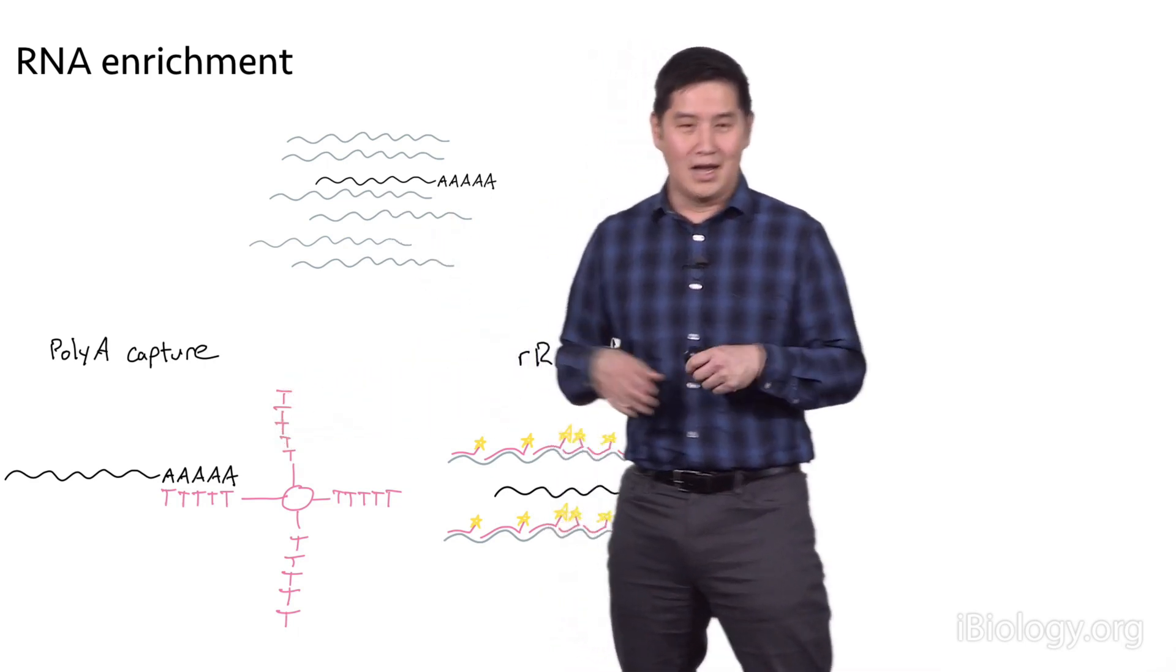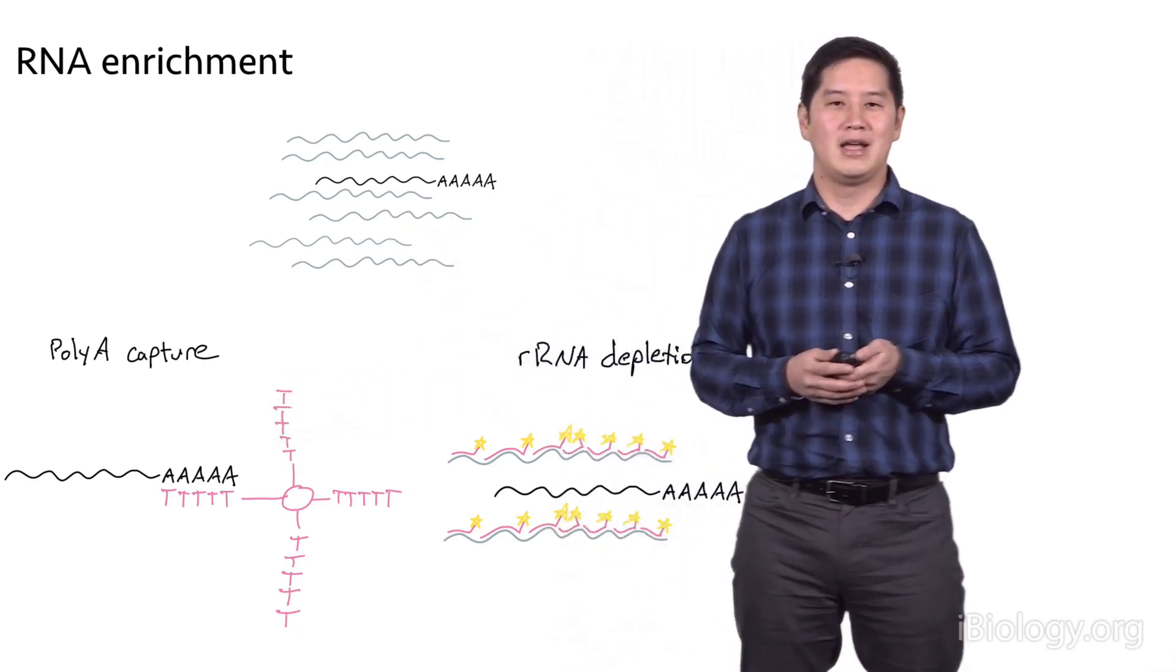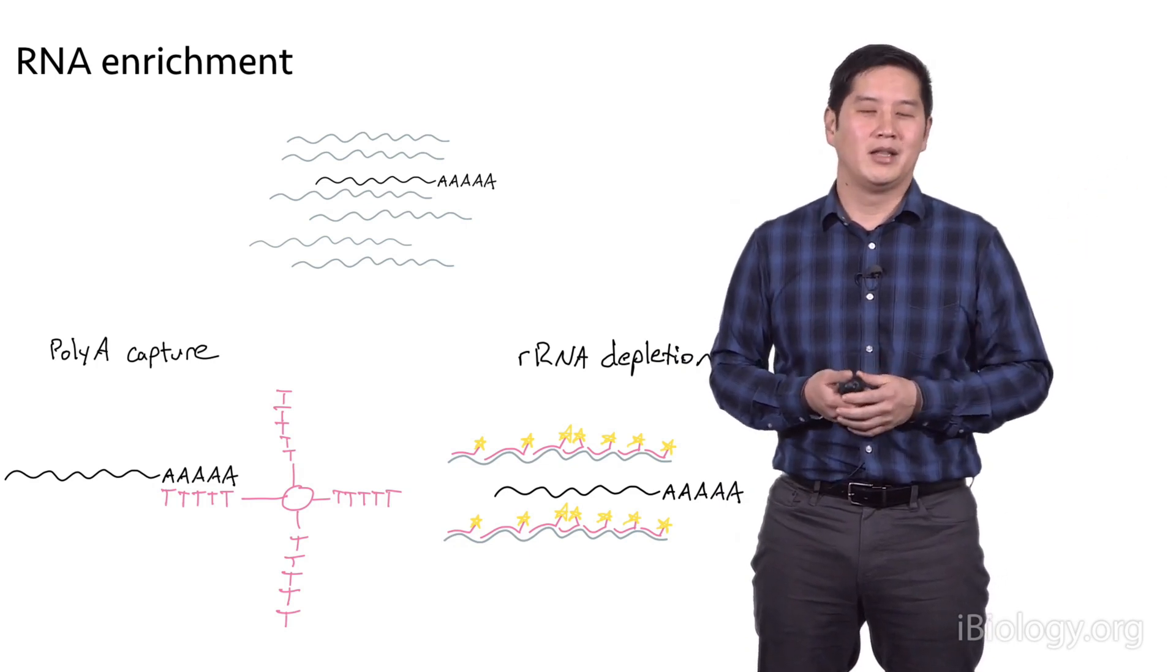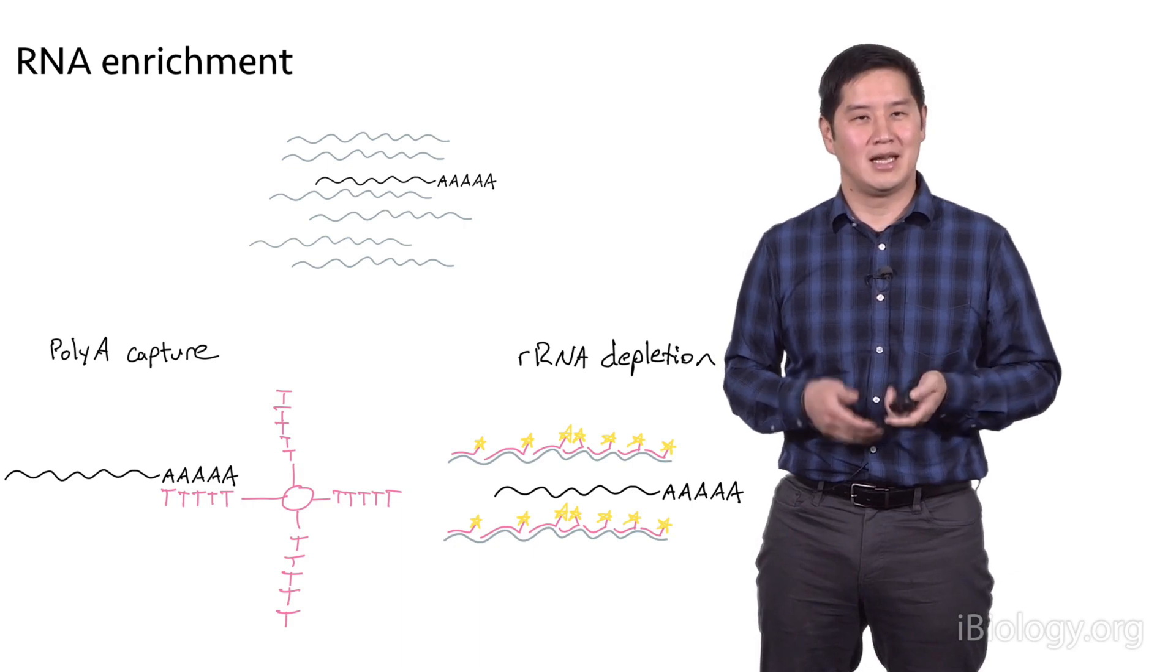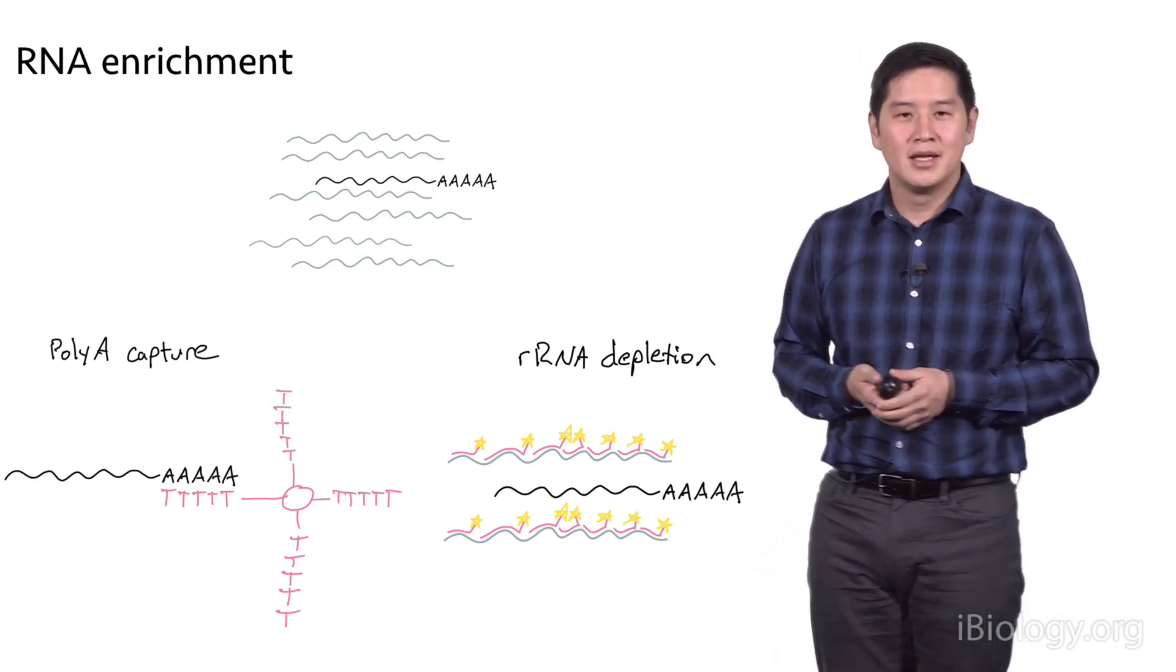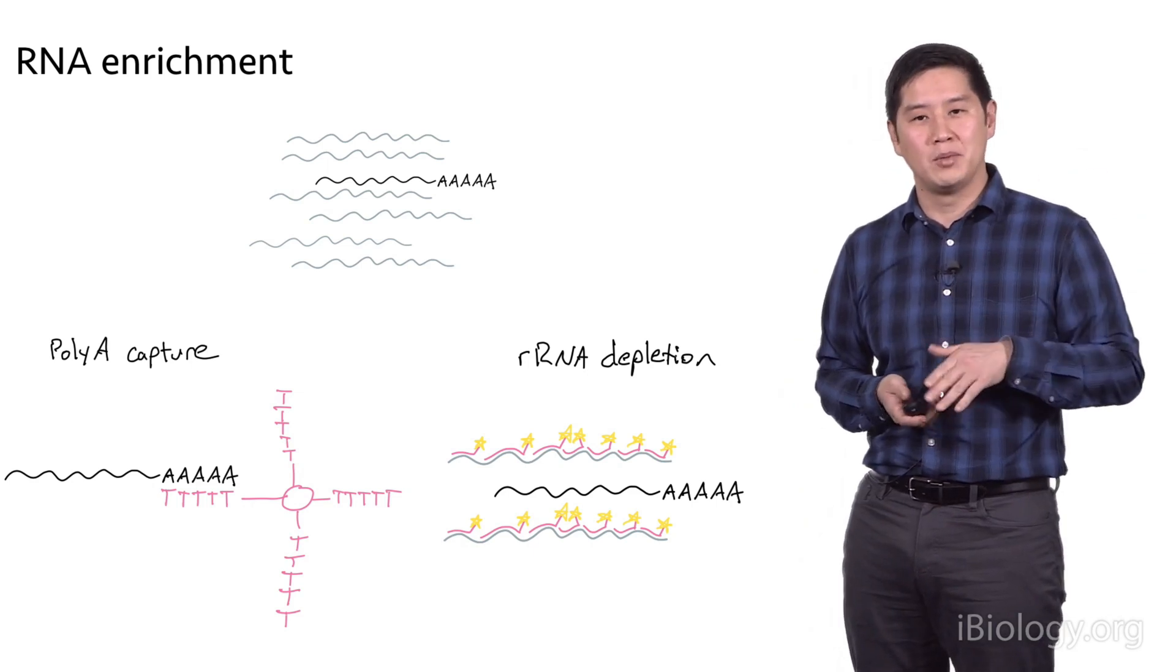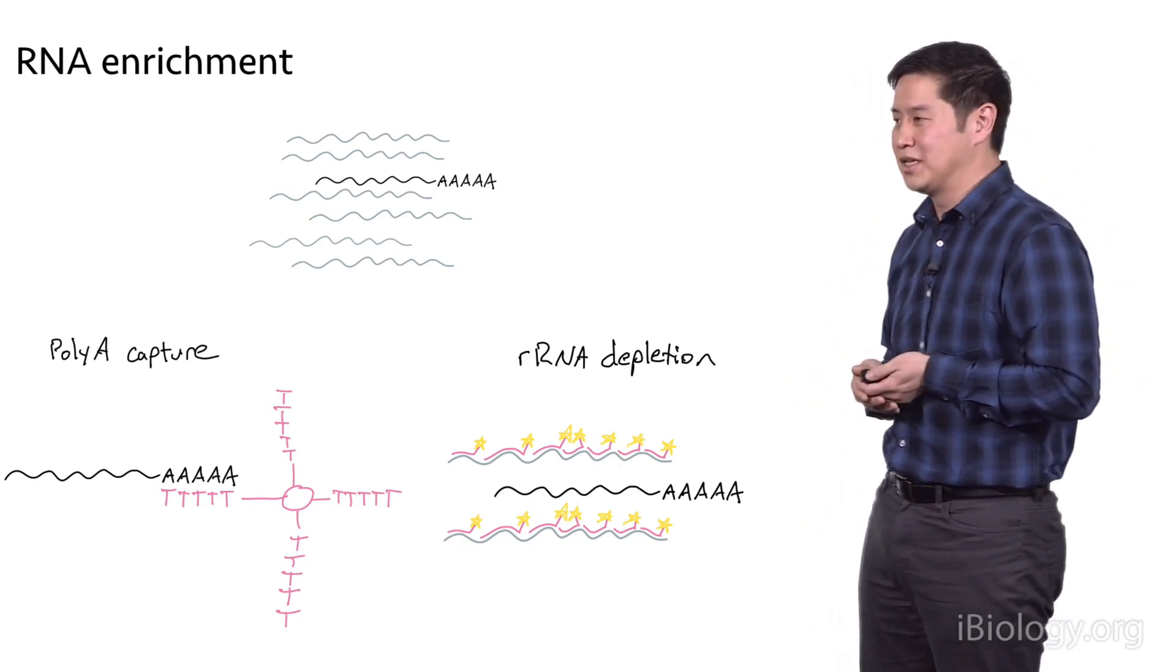These can be washed so that the ribosomal RNAs are washed away. Then you elute the poly-A messenger RNA from the beads and go through a library preparation. A second method is instead of capturing poly-A RNA, you can deplete ribosomal RNA. There are a couple different methods of doing this.